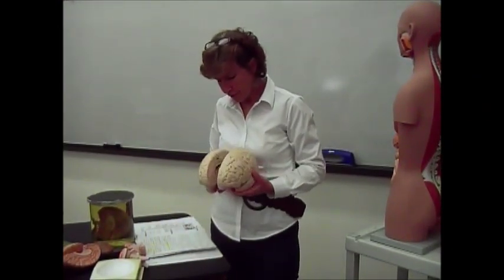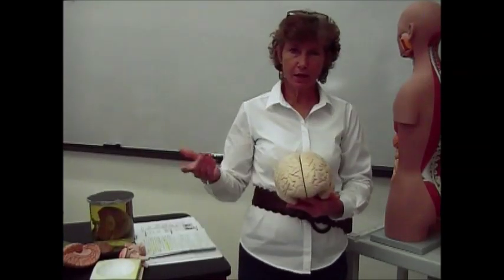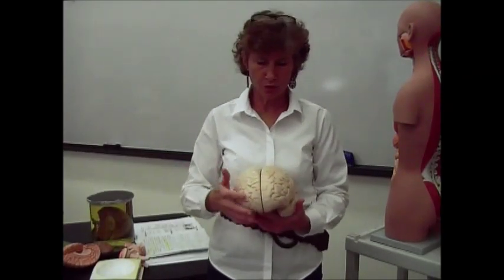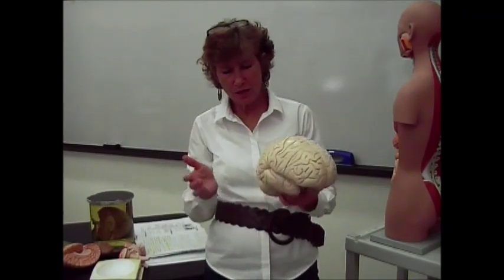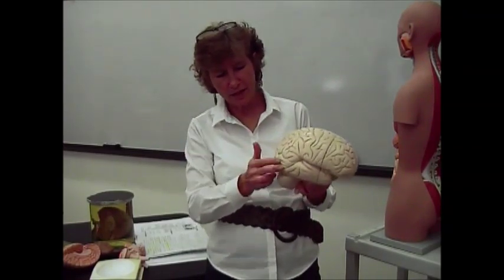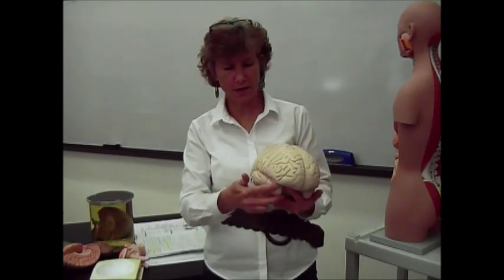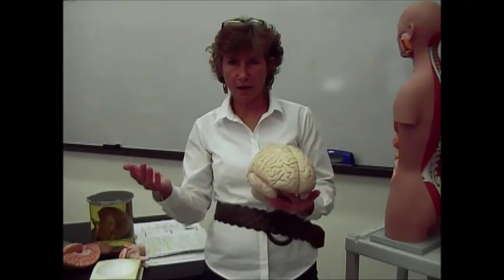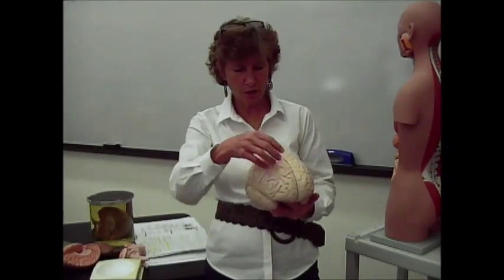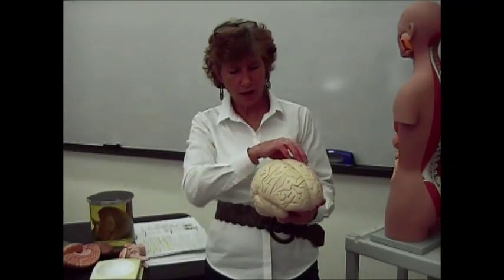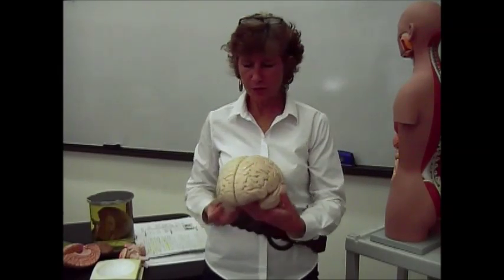There are four different lobes of the cerebrum. If you know your bones, you know your lobes. You've got the frontal lobes, the parietal lobes, the occipital lobes, and the temporal lobe hanging off to the side. So it follows the same way your bones do — two frontal lobes, two parietal lobes, two occipital lobes, and two temporal lobes.